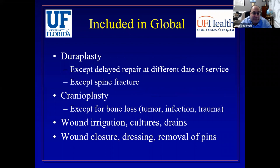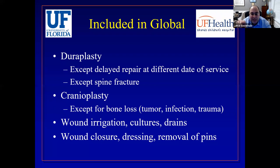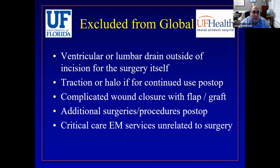On the closure side: duraplasty is included, except if there's a delayed repair on a different date of service — for example, fixing a CSF leak or coming back later to close the dura. Cranioplasty is included in the global — putting the patient's bone flap back is part of the procedure, even adding hydroxyapatite cement. However, if there's bone loss due to infection, trauma, or tumor invasion and you must do a cranioplasty because of that, that is separately billable. Irrigation, closures, drains, wound closure, dressing, and removal of pins are all included in the global.